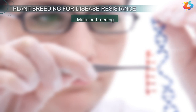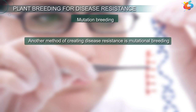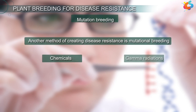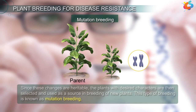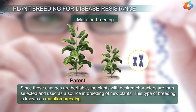Another method of creating disease resistance is mutation breeding. Here, we use chemicals and gamma radiations to induce targeted mutations in selected plants. This sometimes creates desired characters which are not found in the parent plant. Since these changes are heritable, the plants with desired characters are then selected and used as a source in breeding of new plants. This type of breeding is known as mutation breeding.